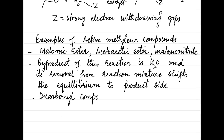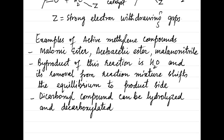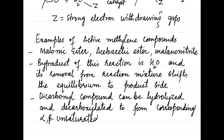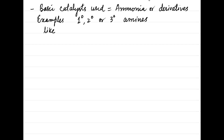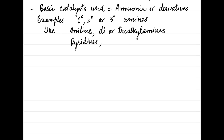The dicarbonyl product can be hydrolyzed and decarboxylated to afford the corresponding alpha-beta unsaturated carbonyl compounds. The basic catalyst used is ammonia or its derivatives, for example primary, secondary, or tertiary amines like aniline, di- or trialkylamines, pyridine, or piperidine.